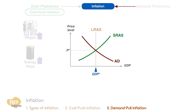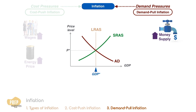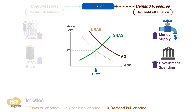When prices rise as a result of demand pressures, it's called demand-pull inflation. The increased demand is usually a result of an increase in the money supply or increased government spending. When this happens, the aggregate demand curve shifts to the right. At this new short-run equilibrium, both the output and price levels are higher. With real GDP above its full employment level, the increase in GDP is not sustainable.